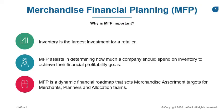These plans are dynamic financial roadmaps that set assortment plan targets for your merchants, planners, and allocation team. Think of these plans as your buyer's bank account. The planning team develops the plans that determine the amount of money to put in each buyer's bank account. Buyers, in turn, know how much money they have to buy products in order to meet their sales and profit goals. Your allocation team will see these goals and understand how much inventory is available to assort to the correct locations.